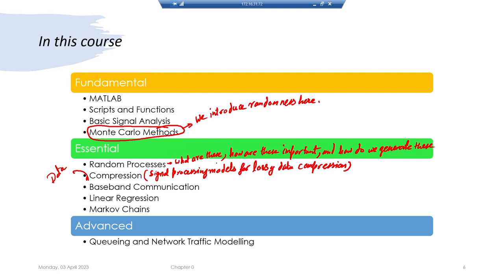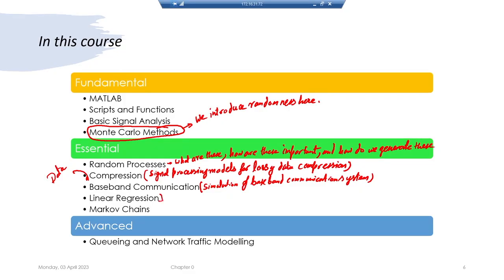Then we will come to the main topic of this course: simulation of baseband communication systems. We will understand what baseband communication systems are, how to simulate them, and how to interpret the numbers. Then there are certain communication systems that require memory and the idea of equalization — for those we will need to learn some machine learning and data science ideas, which I have put into a separate chapter.